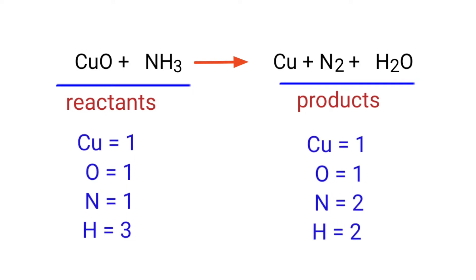If you look at this equation, the equation is not balanced. On the reactants side, there are 1 Copper atom, 1 Oxide atom, 1 Nitrogen atom, and 3 Hydrogen atoms. On the products side, there are 1 Copper atom, 1 Oxide atom, 2 Nitrogen atoms, and 2 Hydrogen atoms.